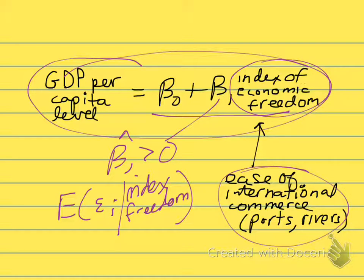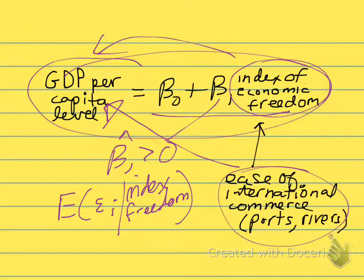But imagine if the index of economic freedom is correlated with the ease of international commerce in terms of transportation. Countries that have really good ports and lots of rivers and borders with other countries, ease of access to other countries, those countries with really low-cost international commerce might have high economic freedom. So it isn't the economic freedom that determines them having high GDP. It's really the ease of transport, the low cost of transport that determines their GDP. A regression makes it look like the index of economic freedom matters, but maybe it doesn't matter at all. It just so happens it's correlated with low cost of international transport, and that's what's really causing higher or lower GDPs.